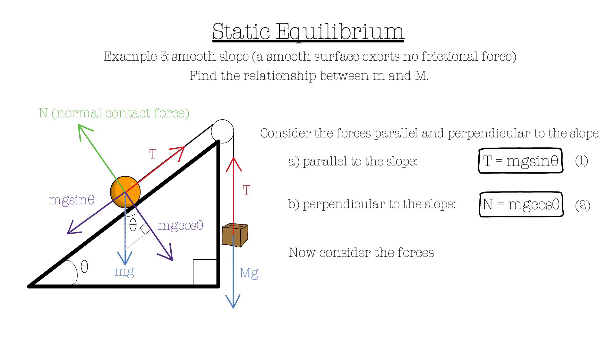Now consider the forces on the box. Here we don't need to resolve anything as the forces acting on it are vertical only. Therefore, T equals Mg. We can assume the tensions on the string on both sides are equal, as they are essentially just one light and extensible string. With that in mind, we can equate equations 1 and 3 to produce a new expression for m and capital M.